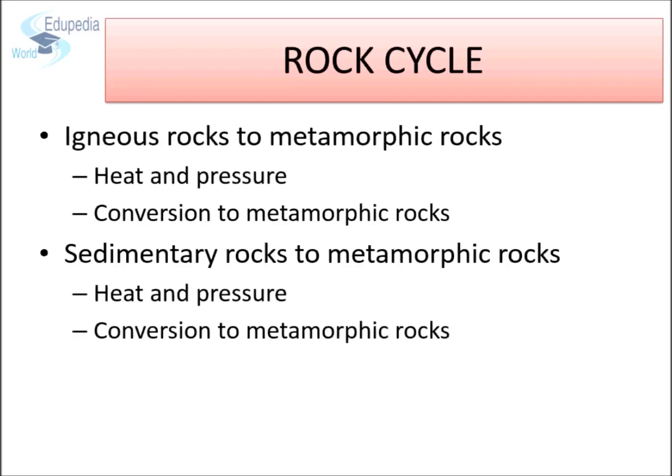Igneous rocks can also convert into metamorphic rocks. In the primitive earth, as igneous rocks were getting converted to sedimentary rocks, simultaneously, these igneous rocks went through some more changes. Since the primitive earth's crust was very unstable, numerous volcanic eruptions, plate movements, earthquakes, etc. were taking place. The rocks had to face intense heat and pressure within the crust, and the result was the formation of metamorphic rocks. At the same time, sedimentary rocks were also subjected to the same heat and pressure, and hence also converted to metamorphic rocks.